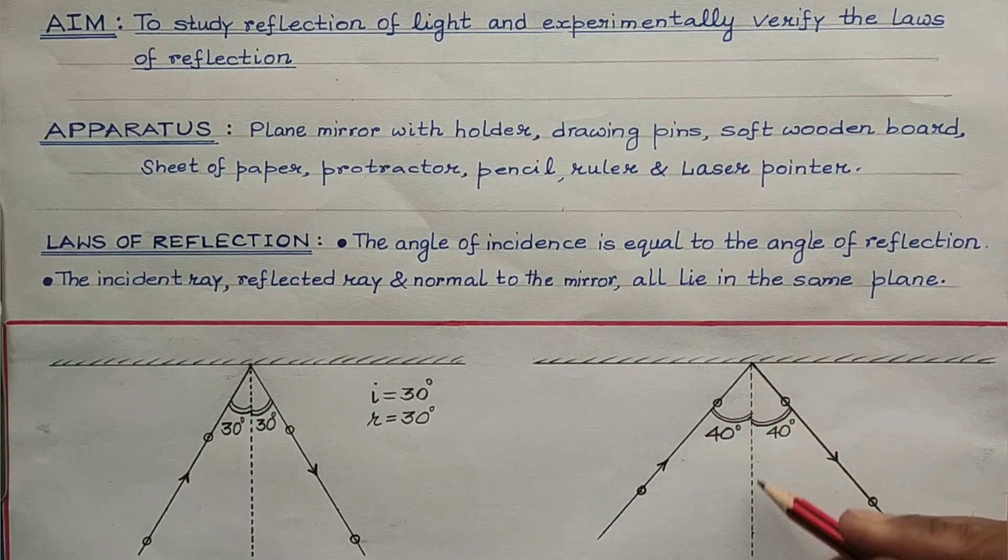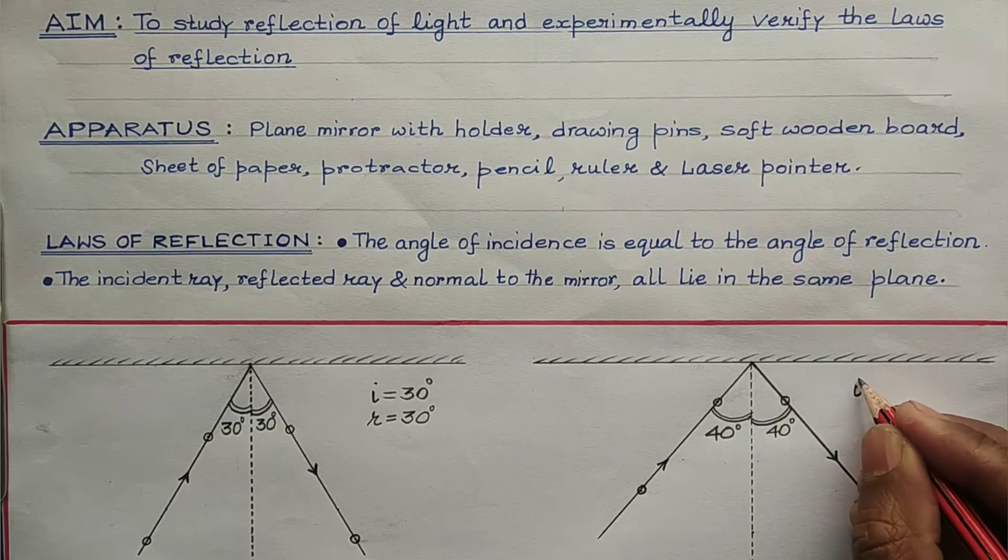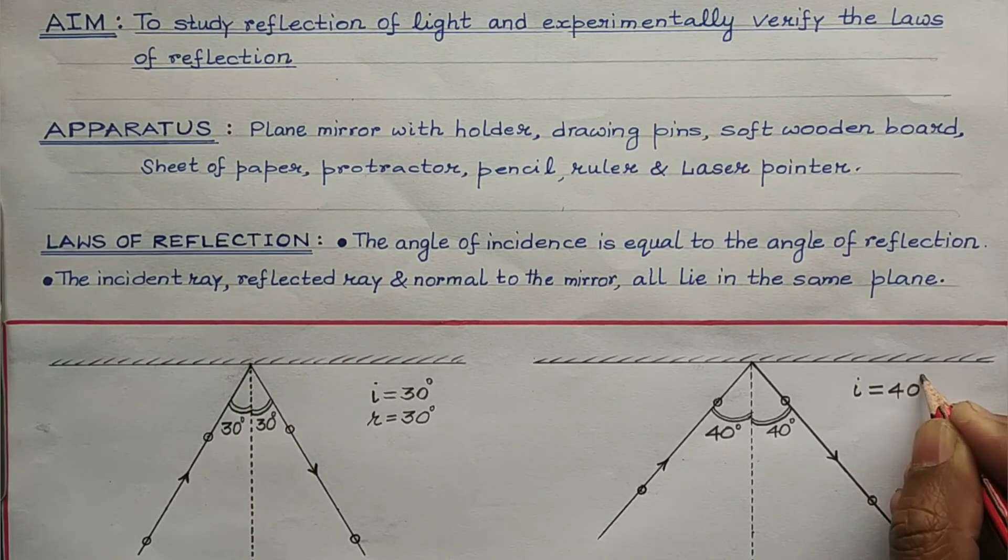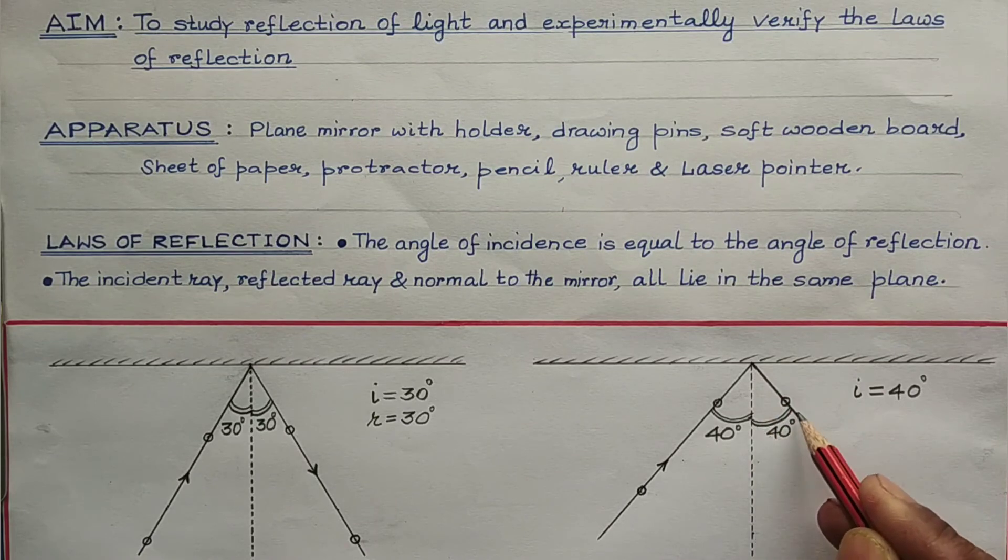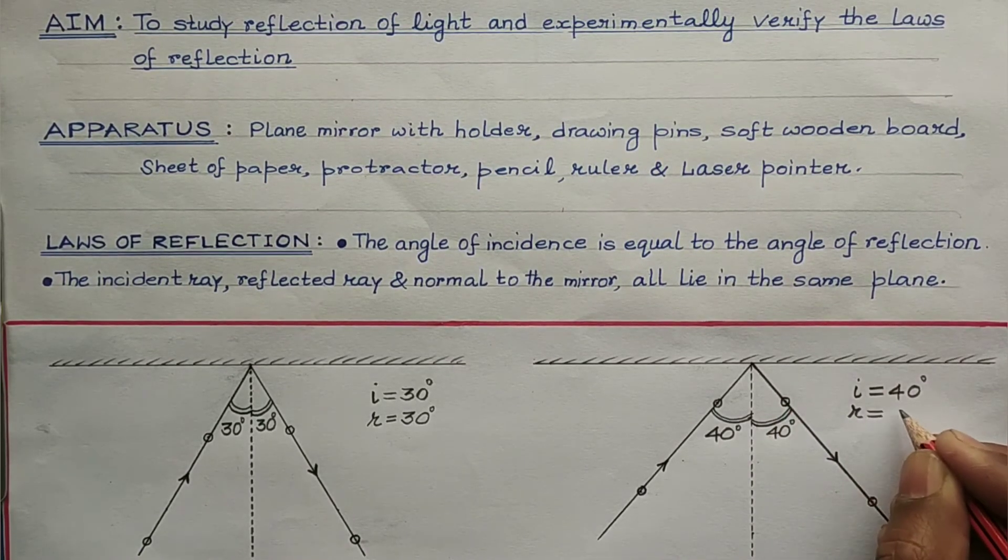In the second observation, again, this is the incident ray and this is the normal and the angle between them would be the angle of incidence. So, corresponding to the angle of incidence of 40 degrees, the angle of reflection which when measured with the help of a protractor is again found to be same which is 40 degrees.